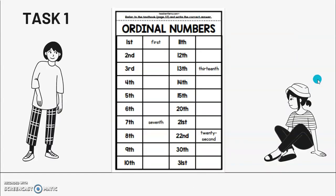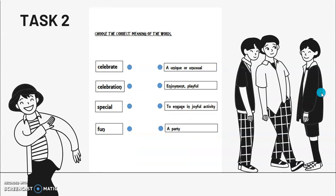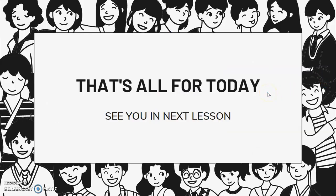Alright, let's continue. So this is your first task — Task one. You have to refer to the textbook, page 37, what we have read in vocabulary, and write the correct answer. This worksheet has been uploaded in the live worksheet as usual, so you type the spelling of the words correctly according to the numbers. Next, the second task is to choose the correct meaning of the words and match it. This has also been uploaded in the live worksheet, so you answer online. And that's all for today. See you in next class. Bye!